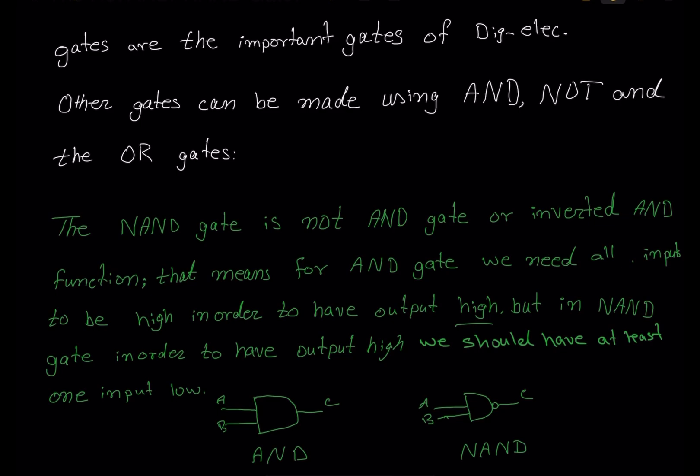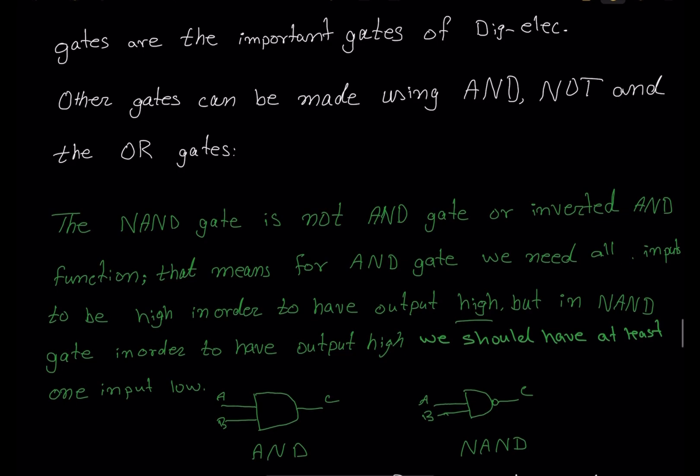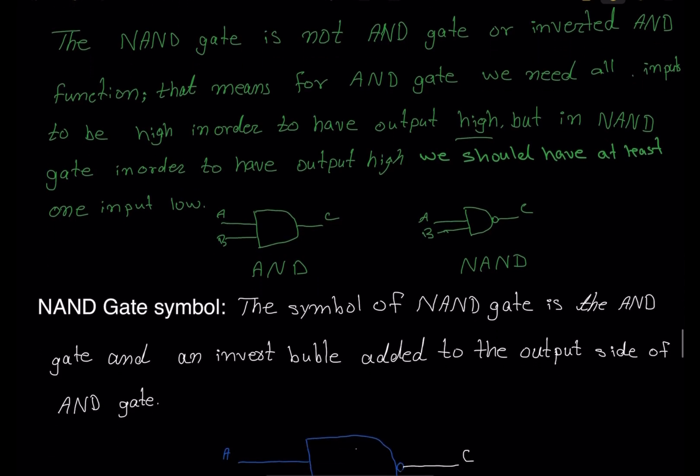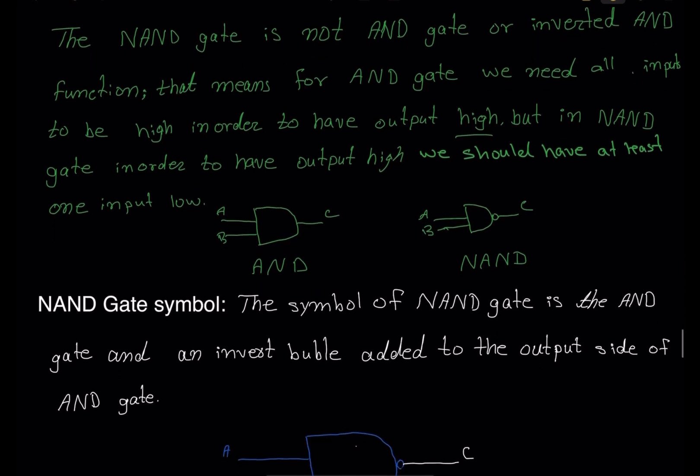That is a unique condition of the NAND gate: when both inputs — all inputs — are high, the output will be low. But if you have one input high and one input low, the output will be high, because in the NAND gate we invert the AND output. Let's move on and talk about the symbol of the NAND gate.